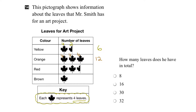Let's see how many red leaves he has. This image here would represent four, this one would represent four, and we've got a half a leaf here, so that would represent two. So the grand total for the number of red leaves would be four plus four plus two, or ten.